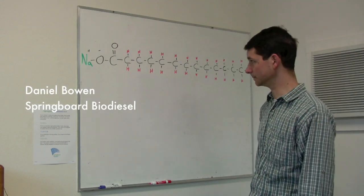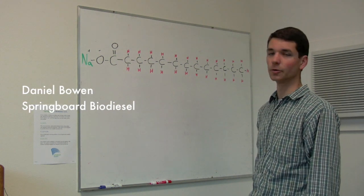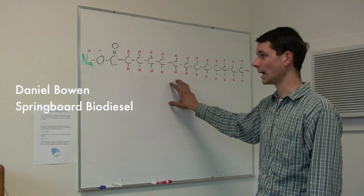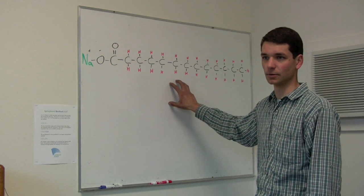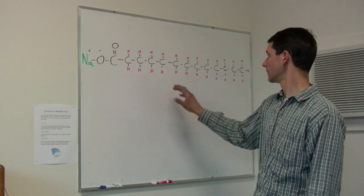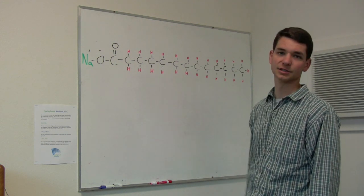What we have here on the board is a typical molecule of soap. This is the primary bad actor as a contaminant in biodiesel fuel. Most of the other contaminants can be washed out pretty easily, but this stuff is what will typically cause engine problems.